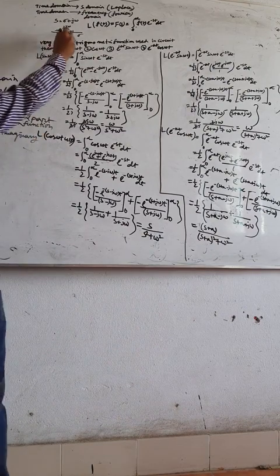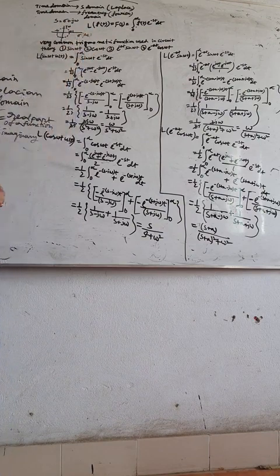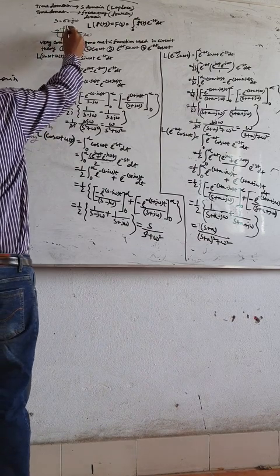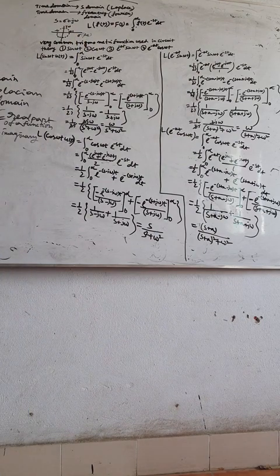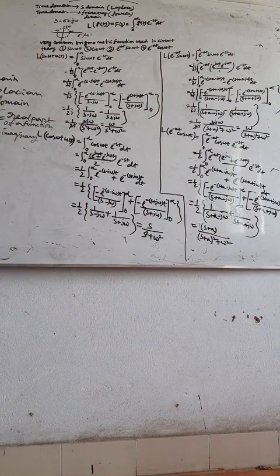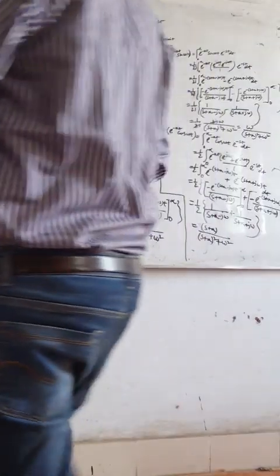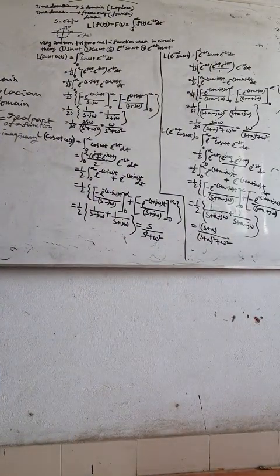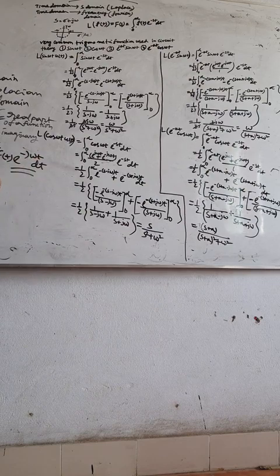On the unit circle, sigma is the real axis and j omega is the imaginary axis. A signal exists with amplitude between plus one and minus one on the real and imaginary plane, and can be expressed in the form of Laplace transformation. For Fourier transformation, F(omega) equals the integral from 0 to infinity of f(t) times e to the power minus j omega t dt.